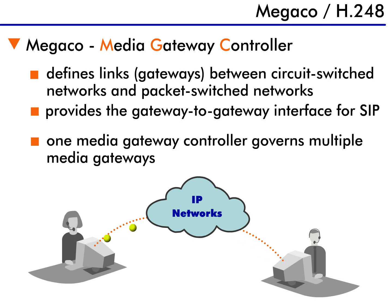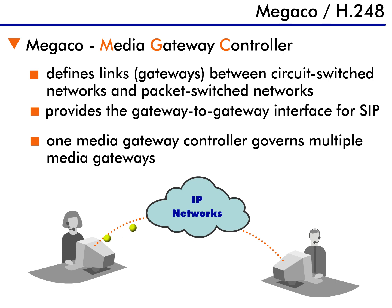Remember, a gateway is a point on a network that provides an entrance to a different type of network. A media gateway is like a translator who helps two people who speak different languages hold a conversation. These media gateways will, for example, allow a caller from a normal telephone to make calls over the Internet.